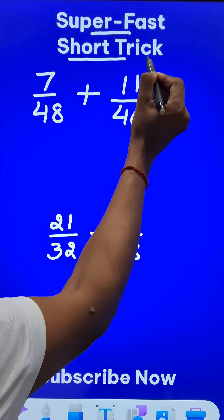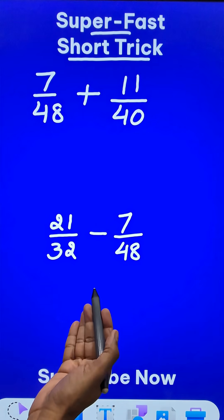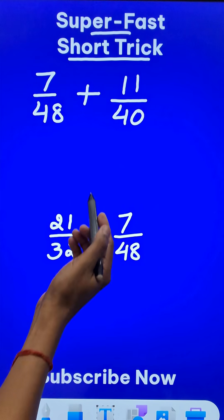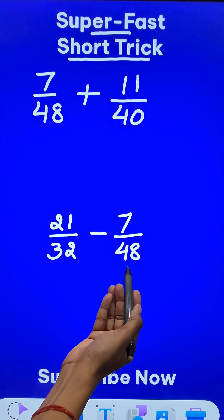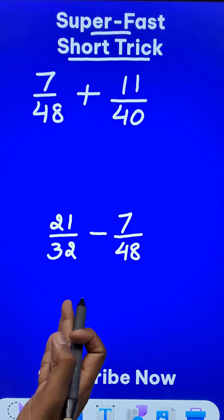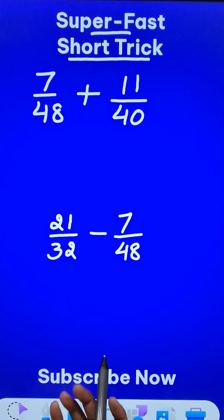Here is the super fast short trick to add and subtract rational numbers. So what will you be doing here? I think you will be taking LCM of 48 and 40, right? Here also 32 and 48. But that itself is a tedious job. Let's simplify it for you.